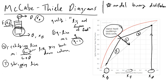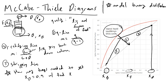Now that we've fully defined our three lines, we can figure out how many trays are needed and where to place the feed tray. The question is: how many trays are needed to achieve X sub D equal to 0.9, given a feed X sub F of 0.5? We just made this McCabe-Thiele diagram and can now count the trays needed in our binary distillation column.